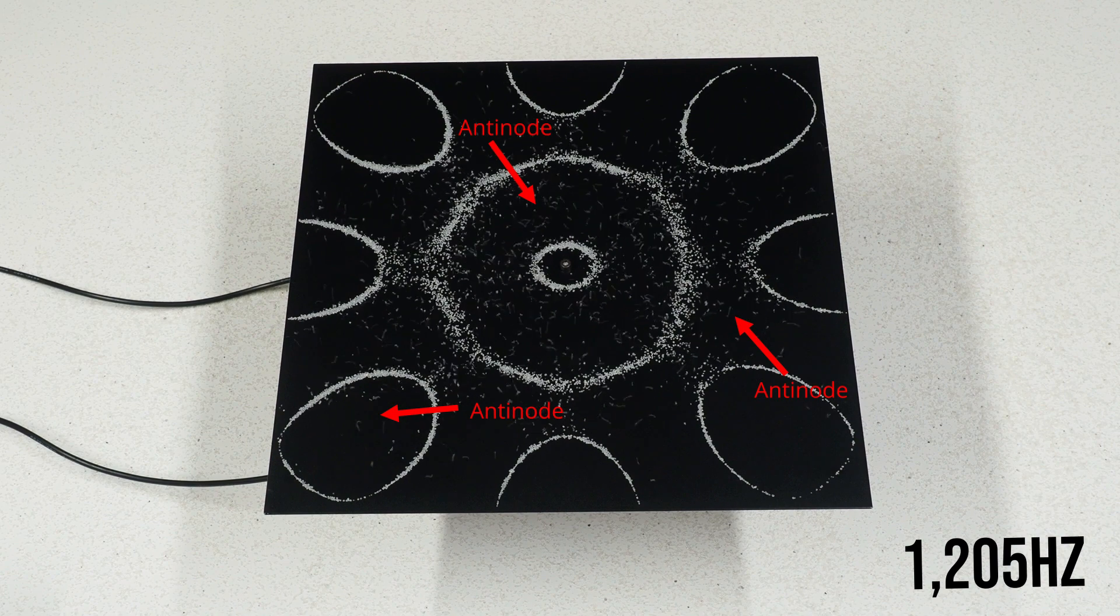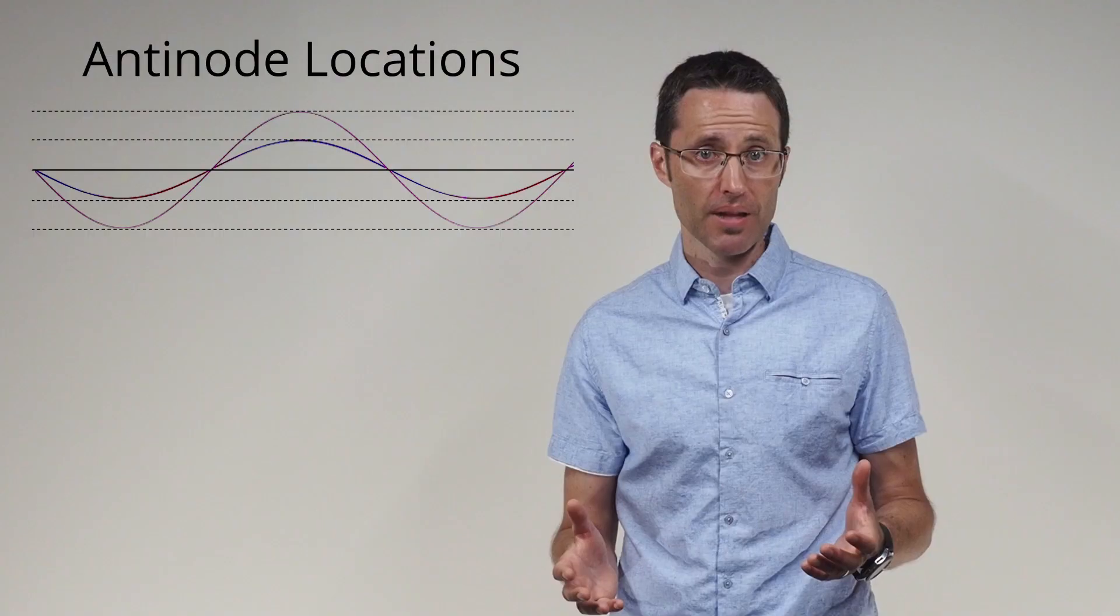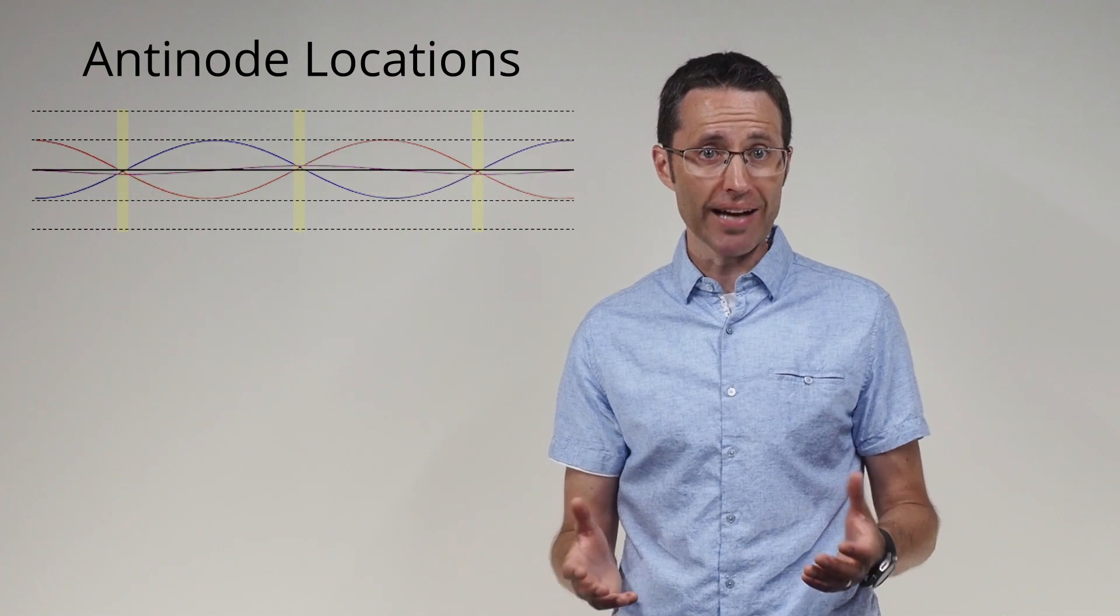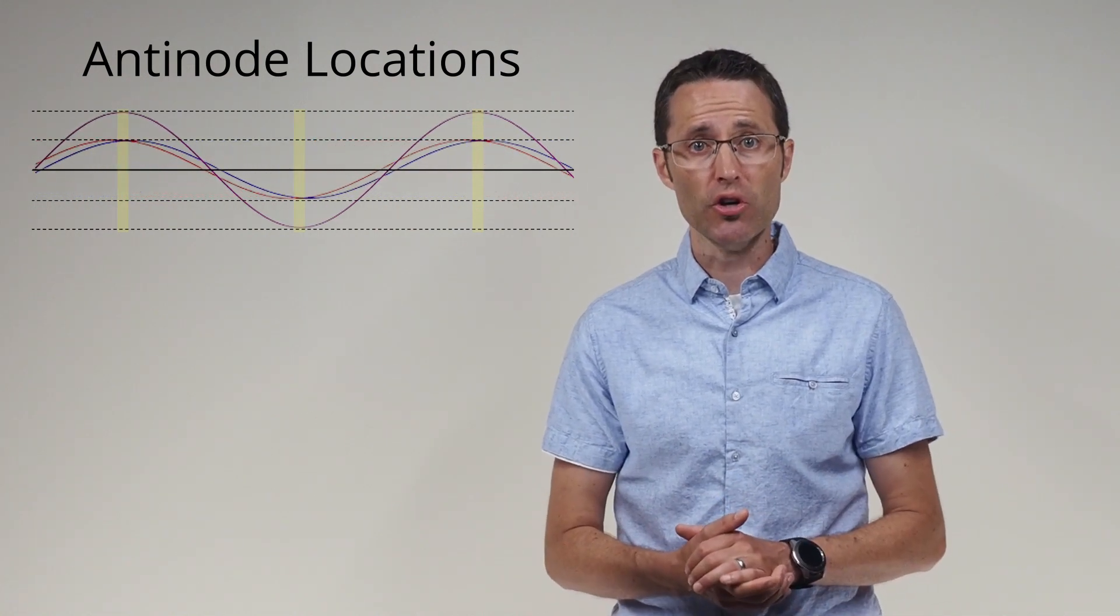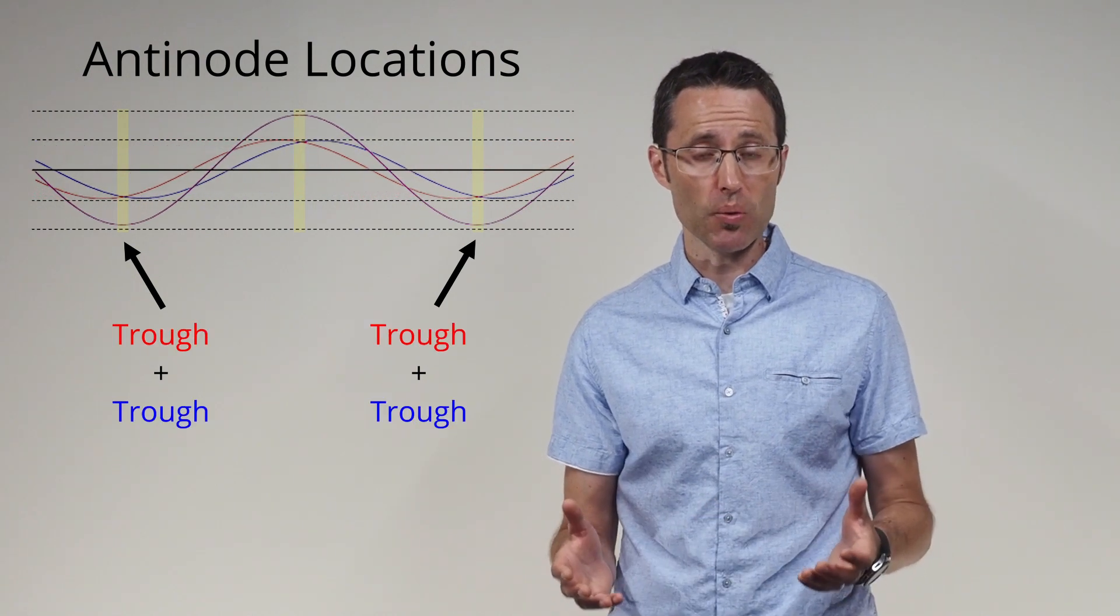Anti-nodes are locations in the material that are displaced up and down more than the displacement of the mechanical wave driver. These would be locations of maximum constructive interference where crests are overlapping with other crests and troughs are overlapping with other troughs.